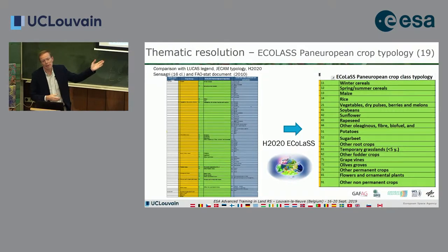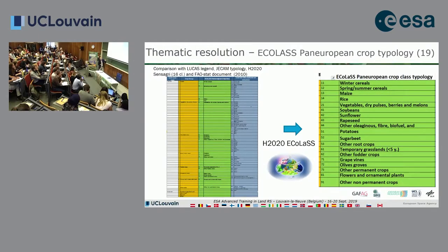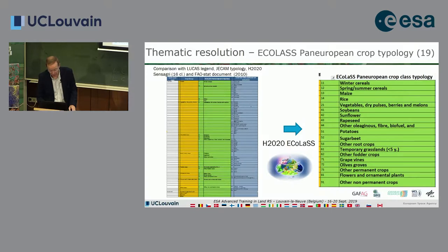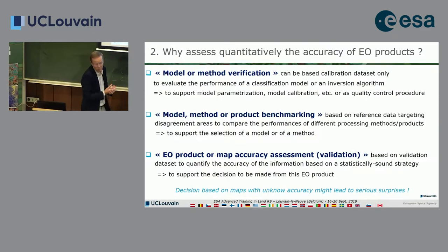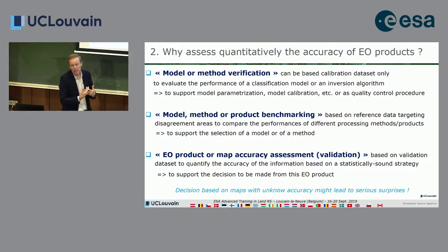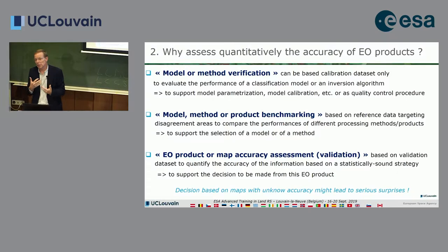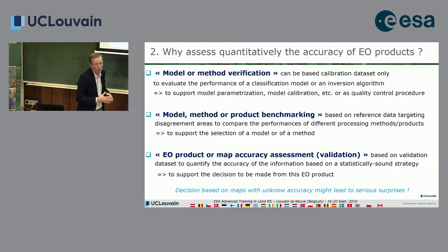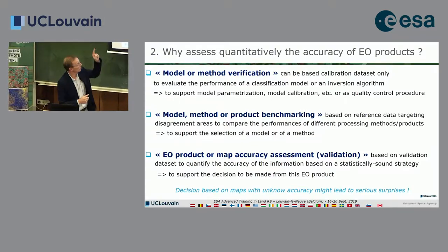The key questions are: what is a temporary grassland? How do you define grassland? What is a fodder crop? These are difficult questions. Now I would like to move to more detail about the eight components of uncertainty and move to why we need to quantitatively assess the accuracy of your product. There are three very different perspectives, and the key is to avoid any mixing between them.